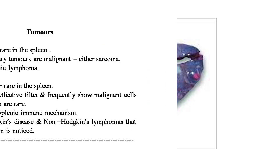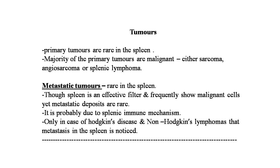Now the tumors of the spleen. Primary tumors are rare in the spleen. The majority of primary tumors are malignant — either sarcoma, angiosarcoma, or splenic lymphoma. Metastatic tumors of the spleen are also rare. Though the spleen is an effective filter and frequently shows malignant cells, metastatic deposits are rare, probably due to splenic immune mechanisms.